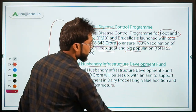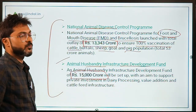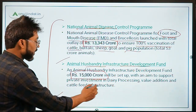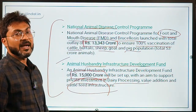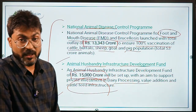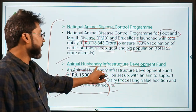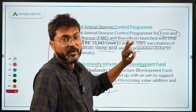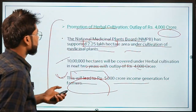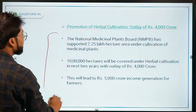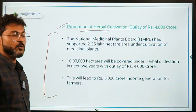An Animal Husbandry Infrastructure Development Fund of ₹15,000 crore was set up to support private investment in dairy processing, value addition, and cattle feed infrastructure.